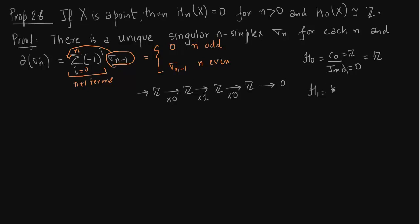What is H1? Kernel of δ1 over image of δ2. What is kernel of δ1? Kernel of δ1 is nothing but the entire ring of integers as you see for H1 = ℤ/ℤ = 0.